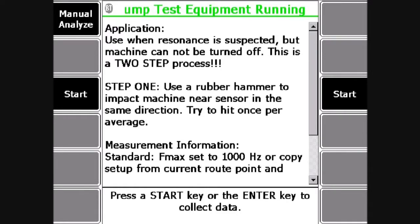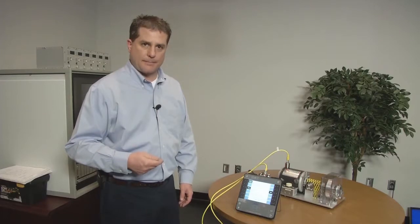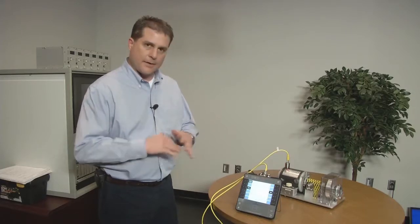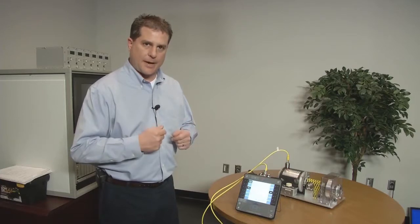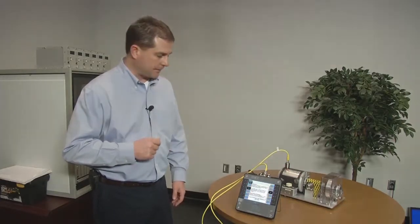It's saying you're going to impact this machine once per average and record the vibration levels. Then for the second step, you're going to stop impacting the machine and record the vibration levels. What it will do is subtract the running vibration of the machine, and what you're left with is the impact. That's the negative averaging. That impact should excite the natural frequency of the machine and show up as the resonant frequency.